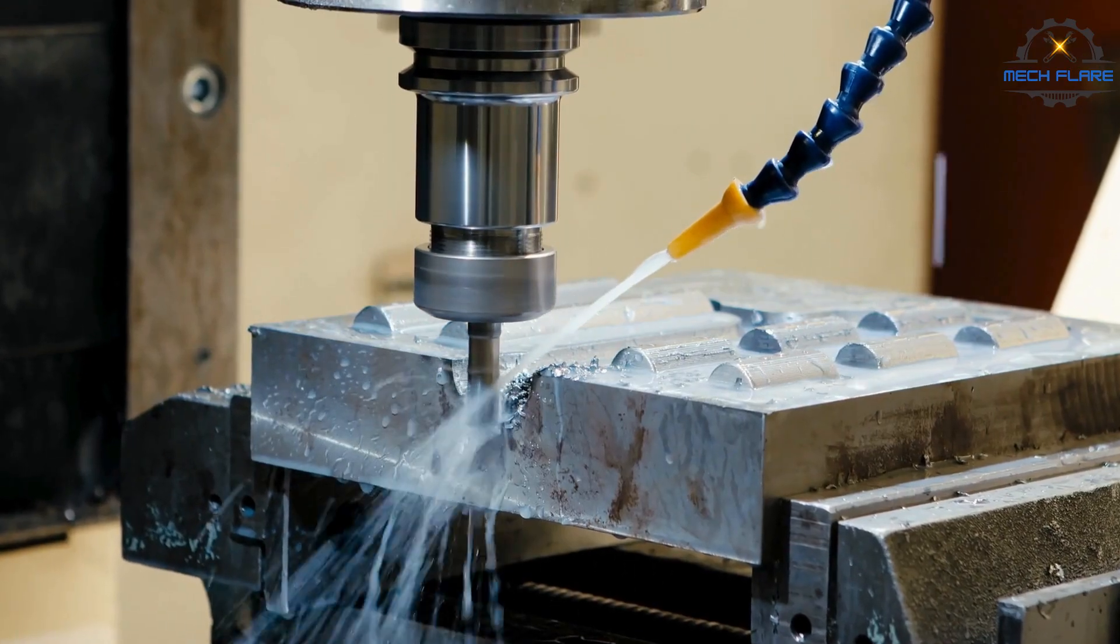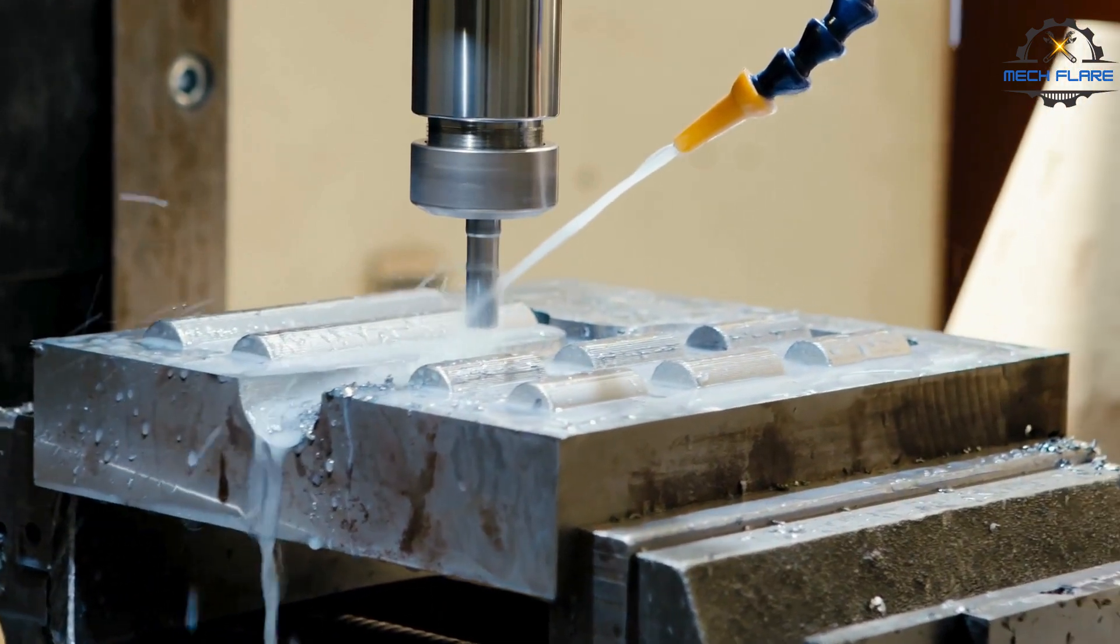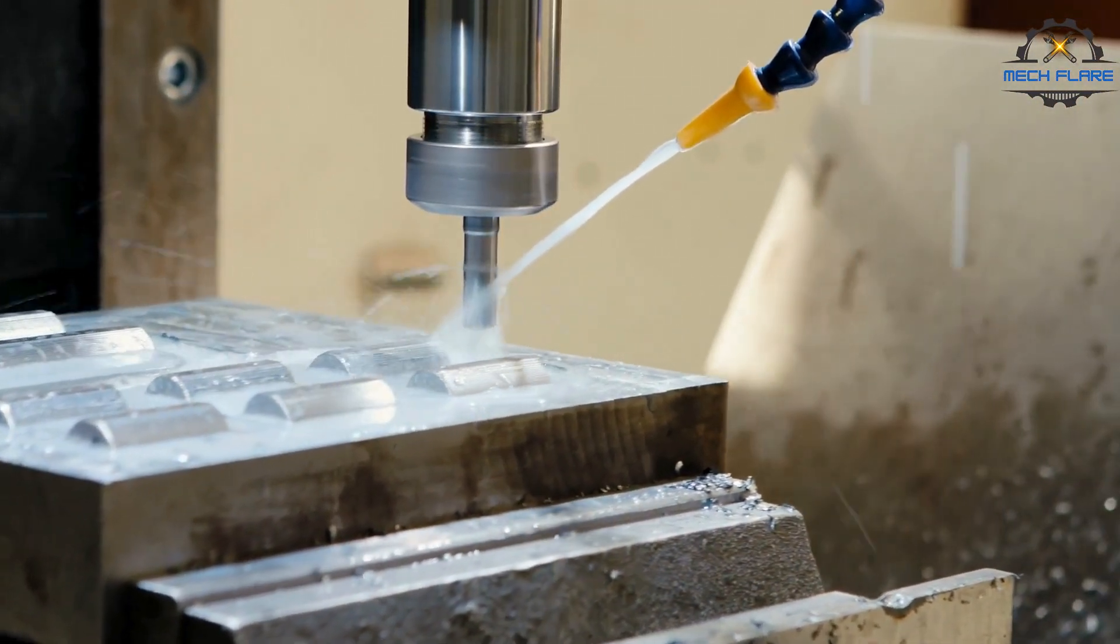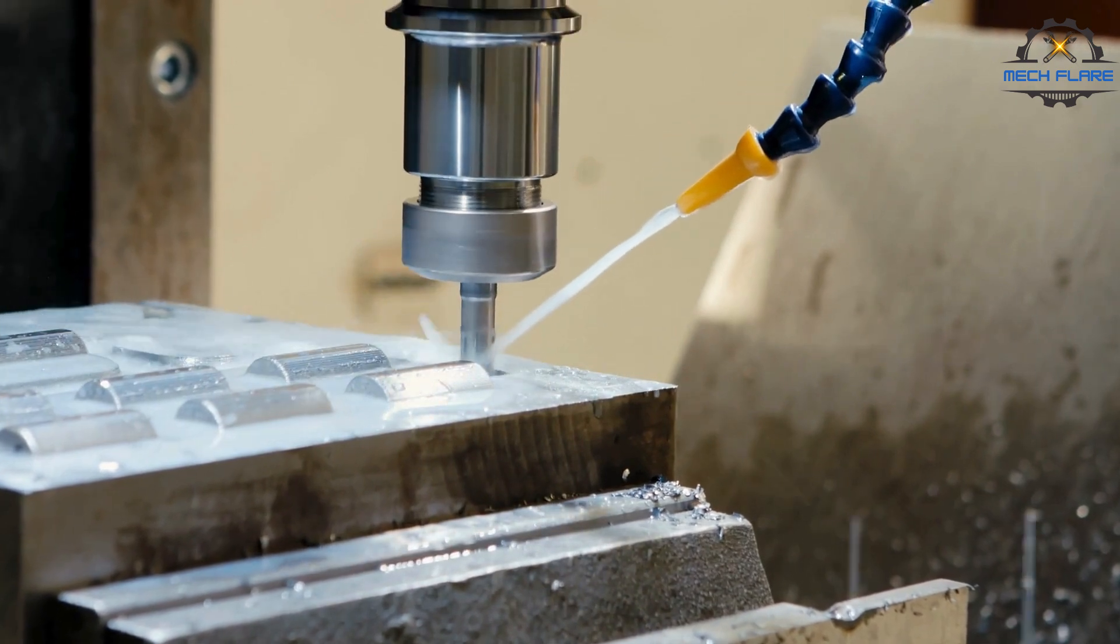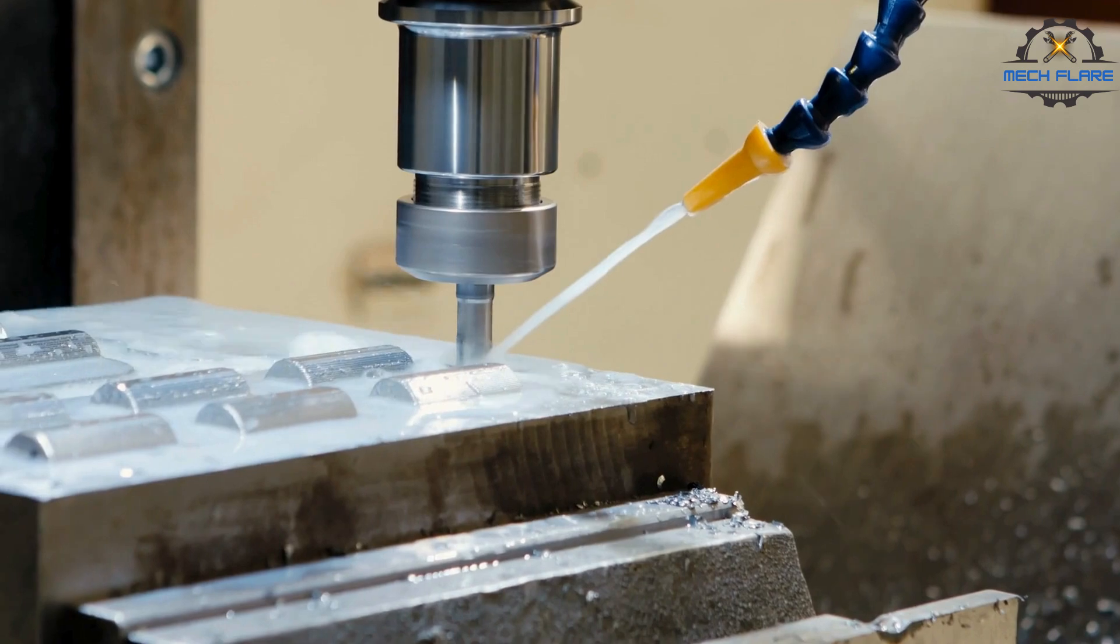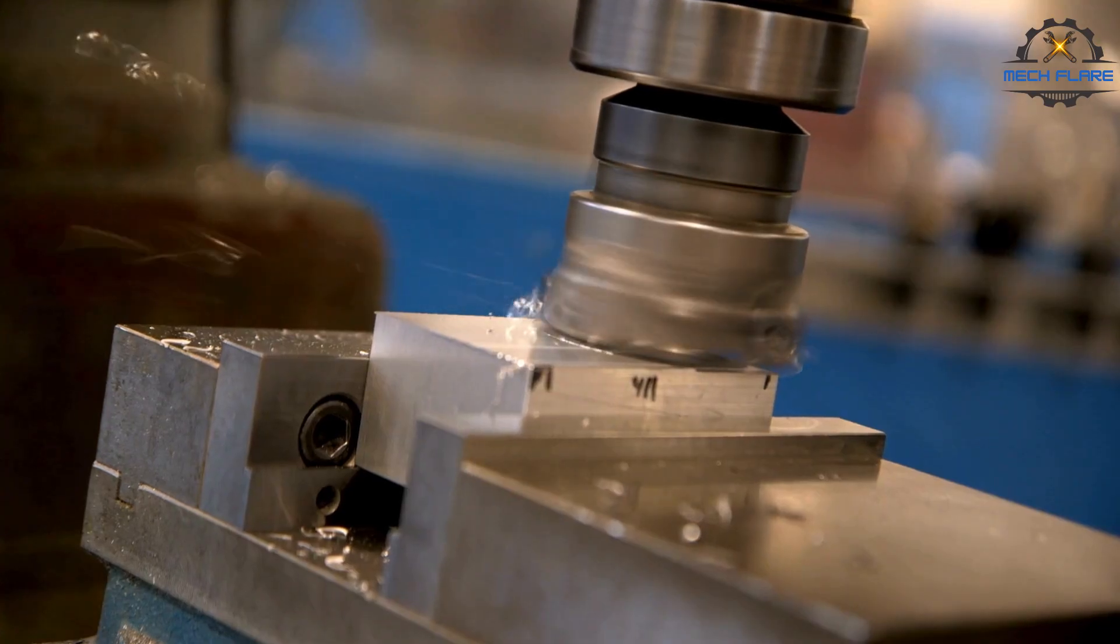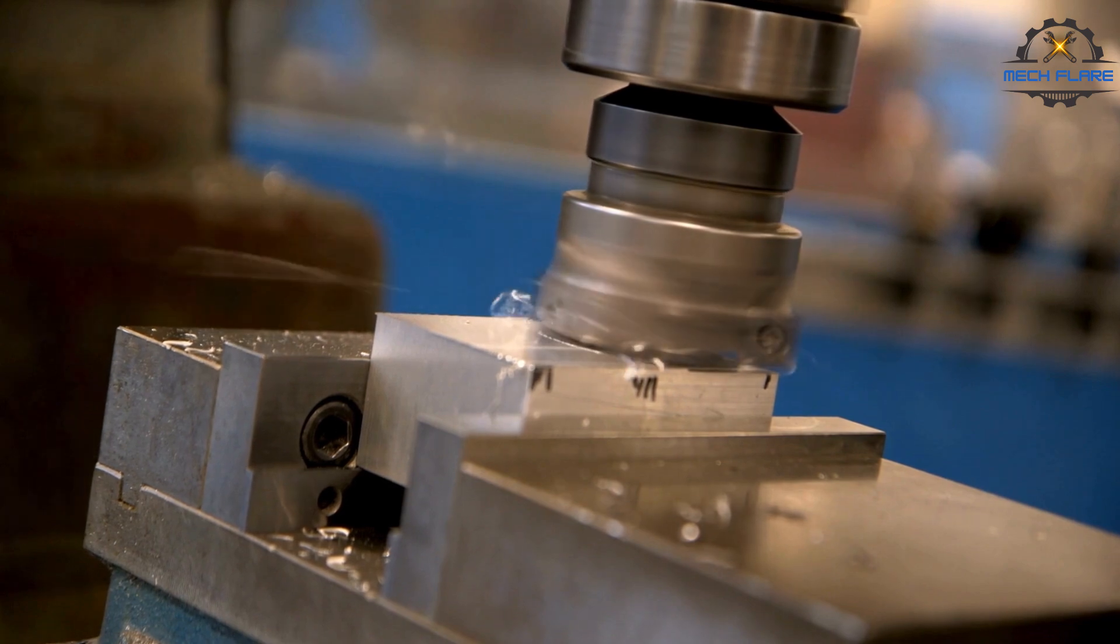Milling is an interrupted cutting operation. The teeth of the milling cutter enter and exit the work during each revolution. This interrupted cutting action subjects the teeth to a cycle of impact force and thermal shock on every rotation. The tool material and cutter geometry must be designed to withstand these conditions.